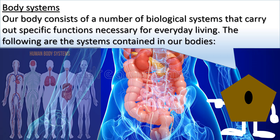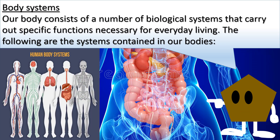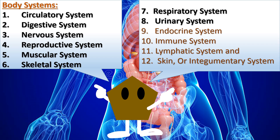Body systems. Our body consists of a number of biological systems that carry out specific functions necessary for everyday living. The following are the systems contained in our bodies: 1. circulatory system, 2. digestive system, 3. nervous system, 4. reproductive system, 5. muscular system, 6. skeletal system, 7. respiratory system, 8. urinary system, 9. endocrine system, 10. immune system, 11. lymphatic system, 12. skin or integumentary system.